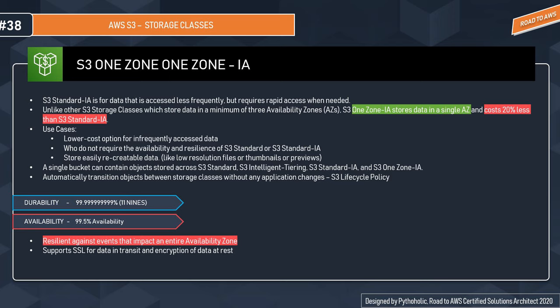S3 One Zone IA is designed for 11 nines durability of objects within a single availability zone and 99.5% availability over a given year. Because data is stored in a single availability zone, data stored in this class will be lost if the availability zone goes down. It is a very low-cost option for infrequently accessed data, so use it wisely.